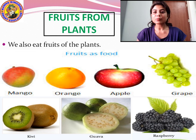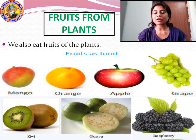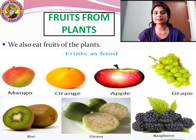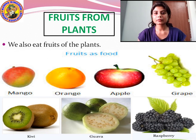Plants also give us fruit. Every one of you eats fruit — like apple, orange, mango, grapes, banana, guava, etc. All these are obtained from plants. Fruits are the part of the plant that we eat as food, for example mango, apple, orange, grapes, banana, guava and kiwi.